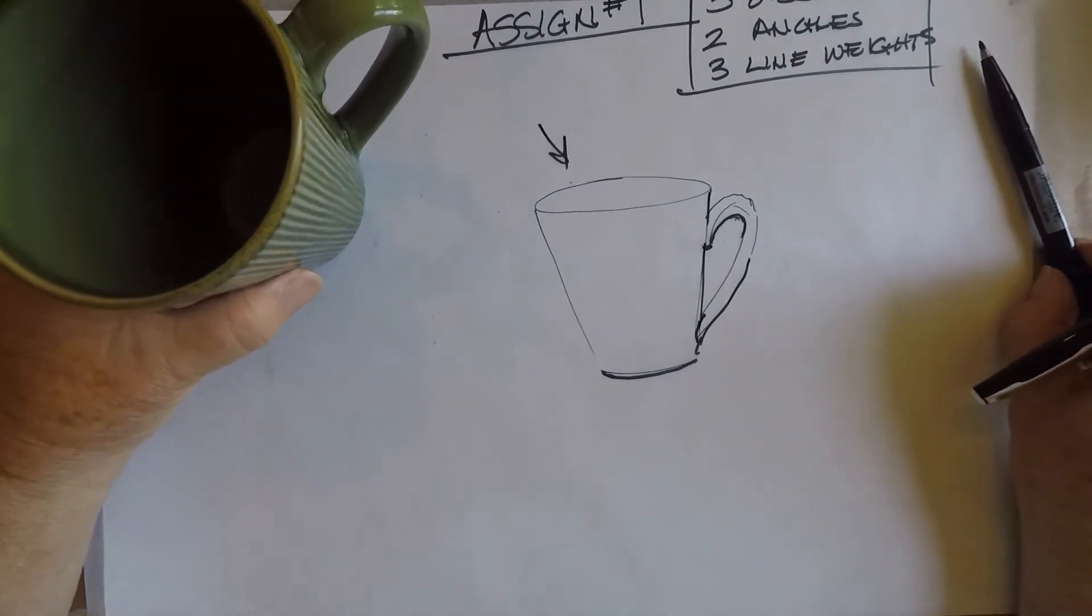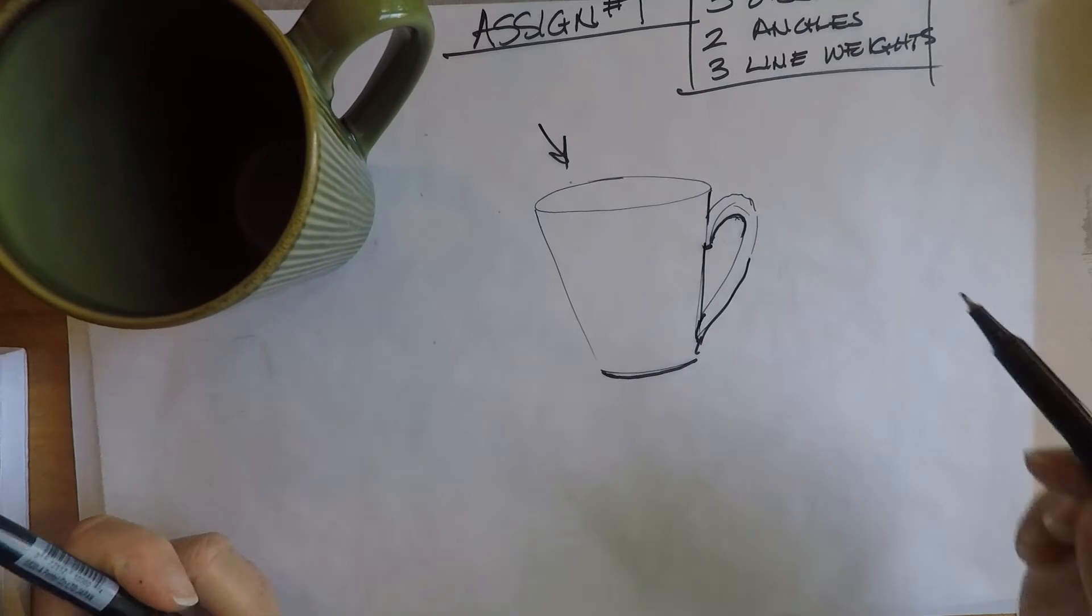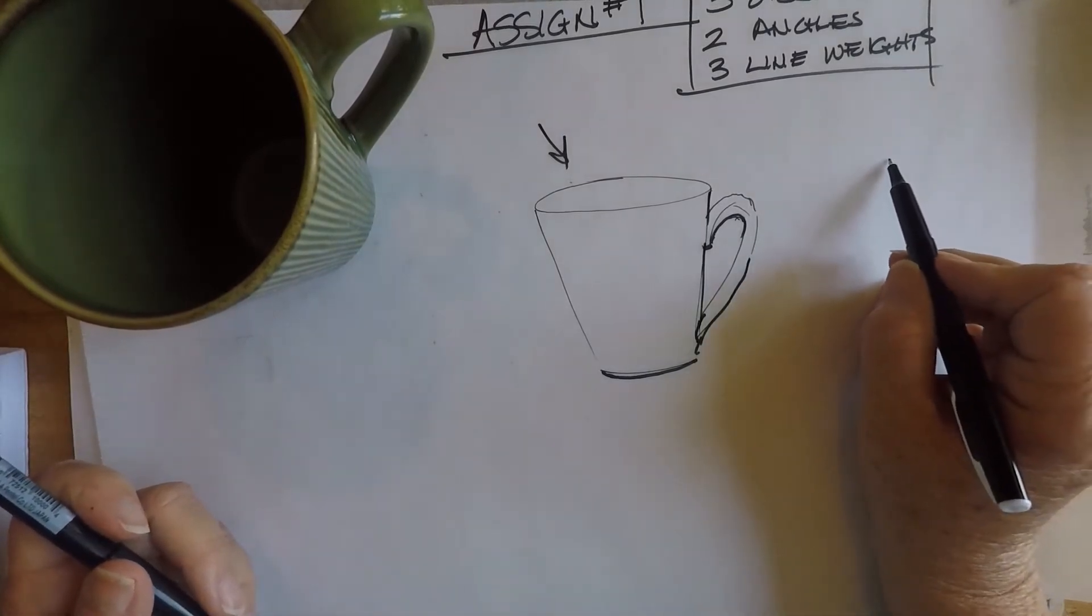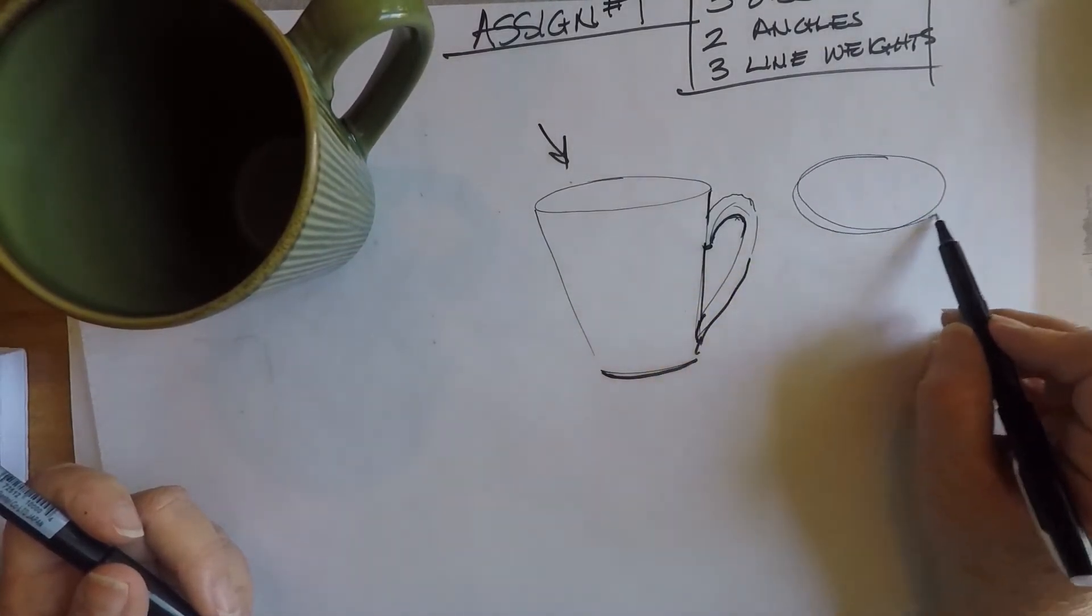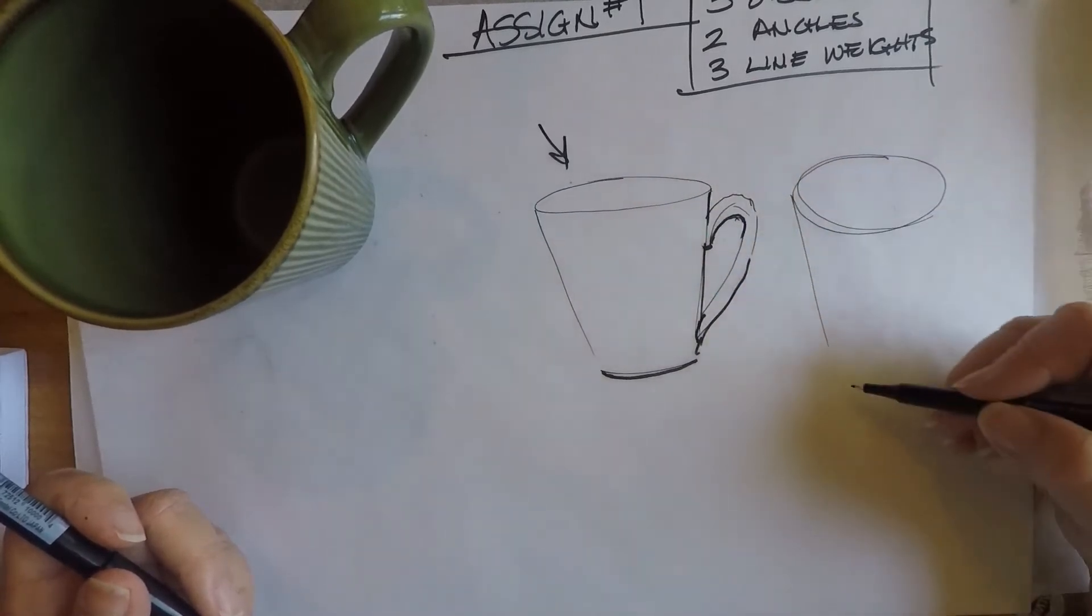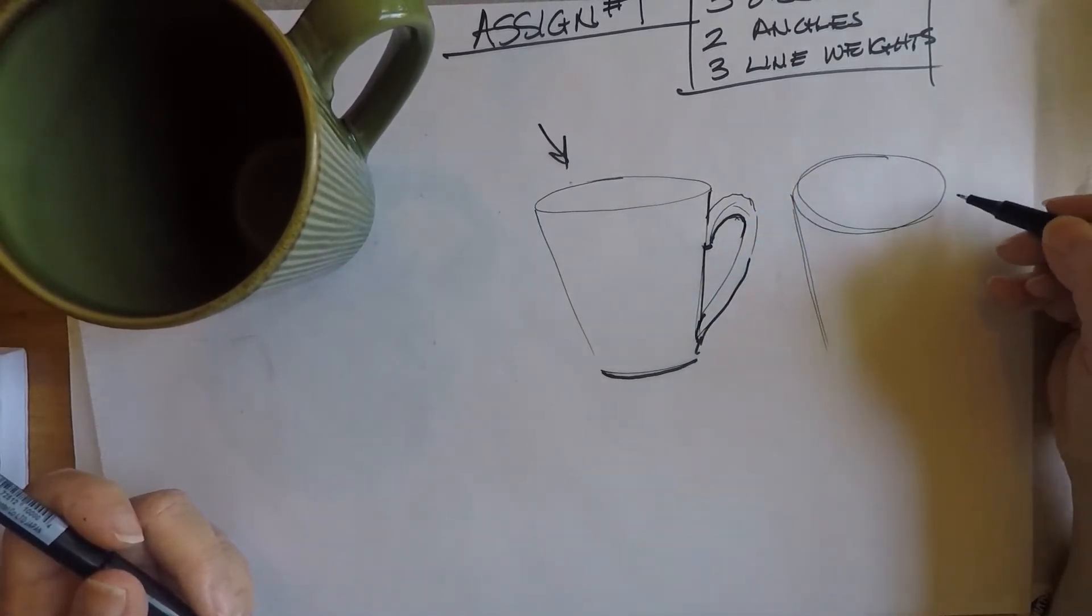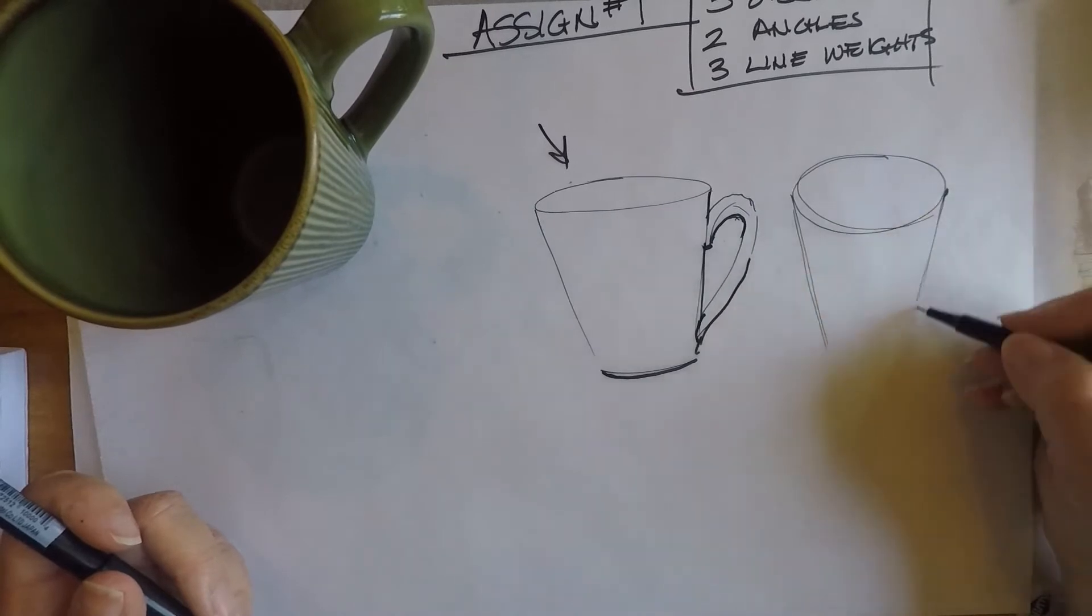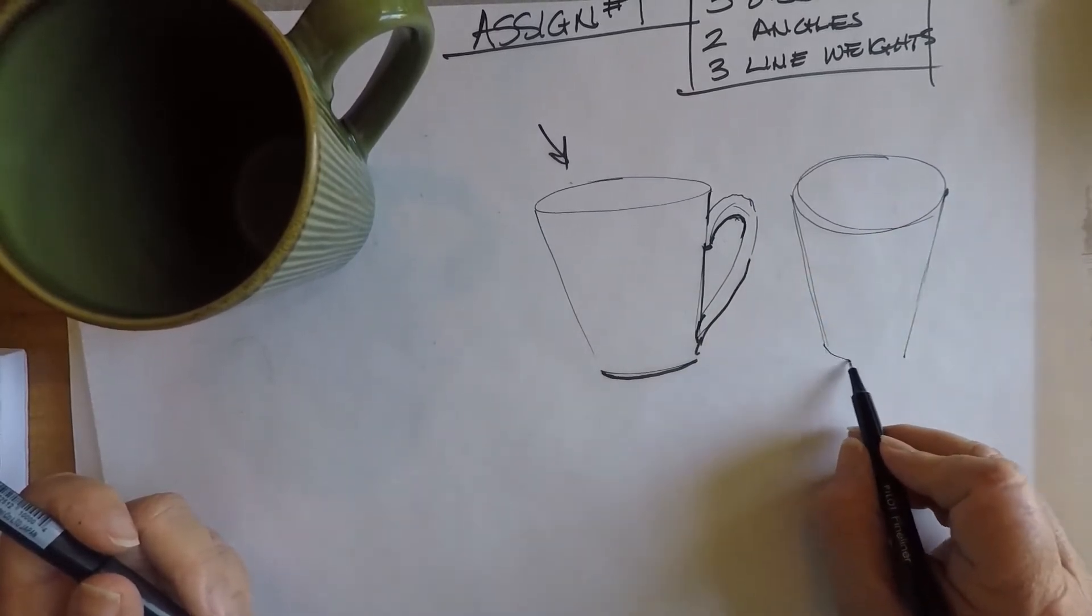Let's say I put the cup more straight up so I can see more of the top of it. A little rounder on the top. So I'm trying to use my full arm movement here. A little round on the bottom.